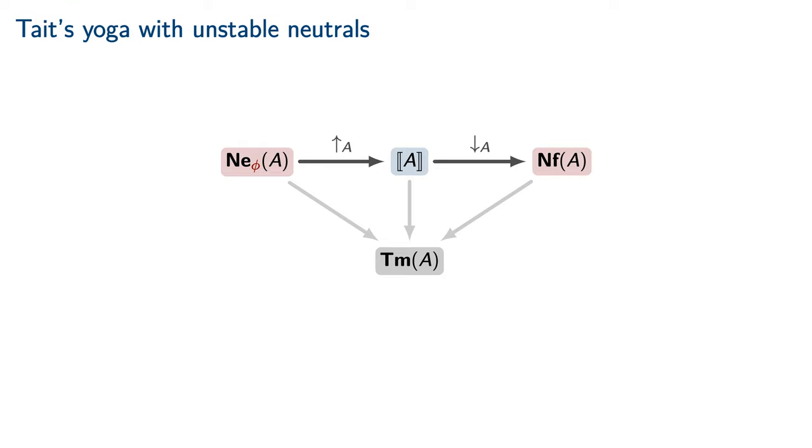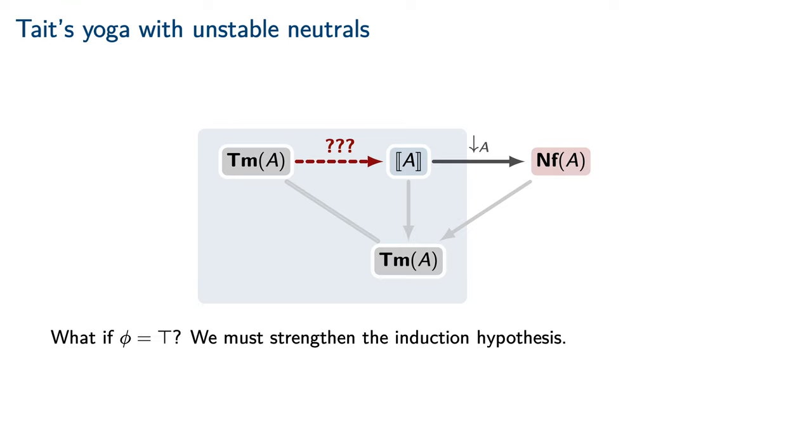We cannot directly apply Tait's yoga in the context of destabilization. Considering the case of a totally unstable neutral, the reflection map would then have to construct a computability datum out of thin air for an arbitrary equivalence class of typed terms. Doing so is exactly as strong as the normalization result that we are attempting to prove. Therefore, it seems unlikely that this closure condition would be satisfied by the types of cubical type theory.